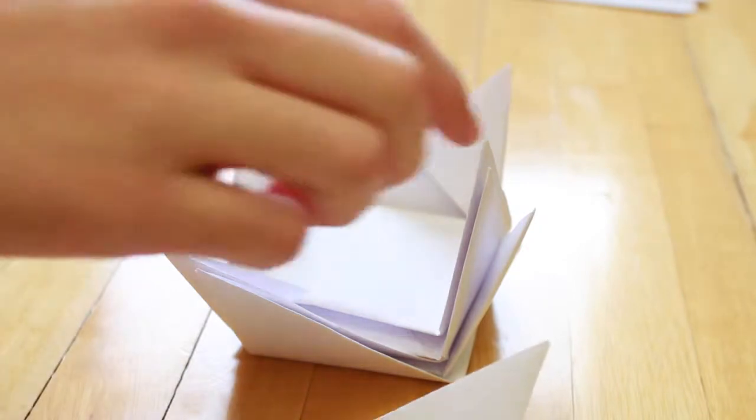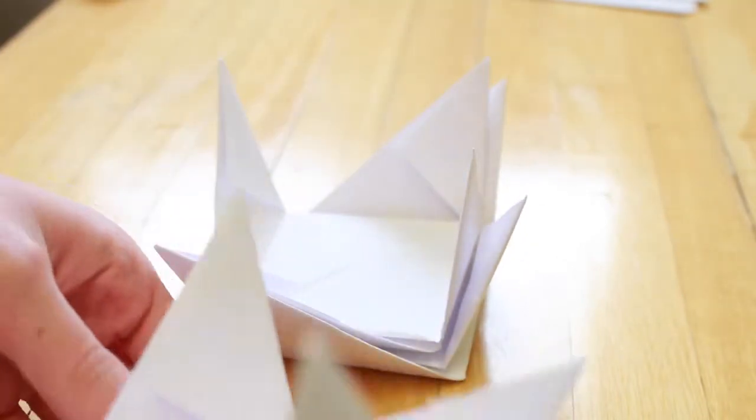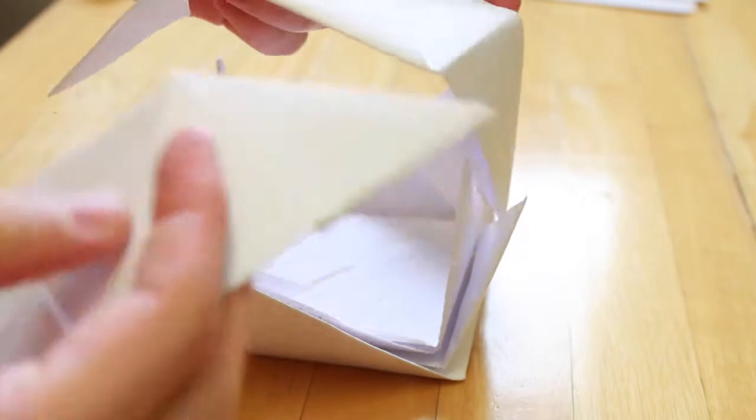Repeat these steps 5 more times to create 6 Sonobe units in total, then slot 2 units together, and then add the third one.